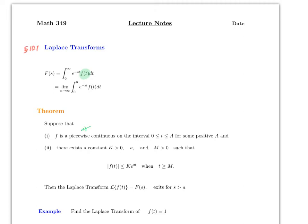Piecewise continuous means the function can have jumps or breaks — it doesn't have to be continuous everywhere. The function also has to be bounded by some constants. The kernel e^(-st) is what forces the integral to converge; if s is negative, the kernel goes to infinity and the transform won't converge.